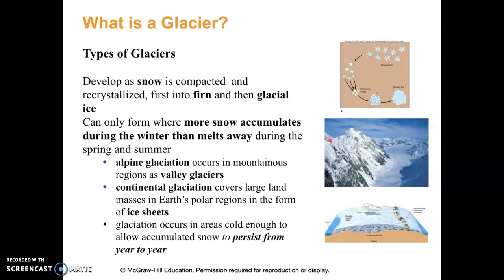Alpine glaciers form in valleys and mountainous regions. Up in the Sierra Nevada, we still have glaciers — not a whole lot of them, and not massively huge. But as we go more towards the poles, we start seeing a lot larger glaciers — some very amazing ones up in Canada and northwards. Continental glaciers are those big ice sheets, and at the poles we can see some of that.